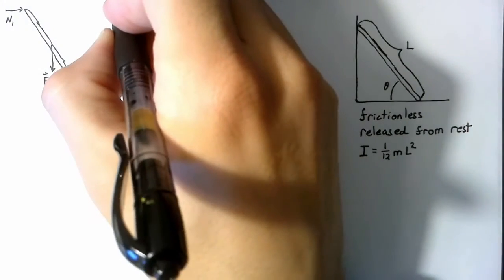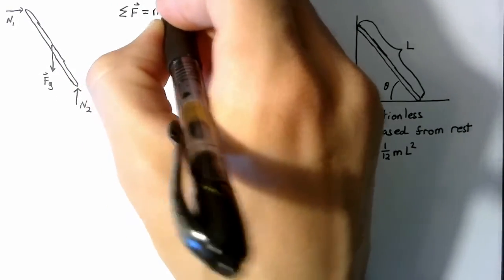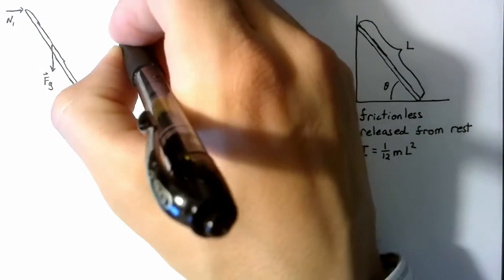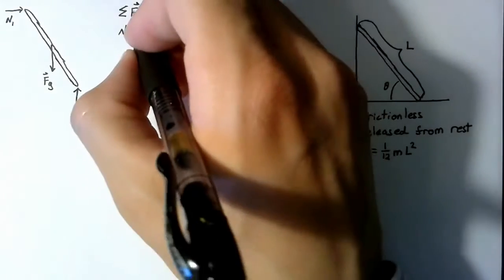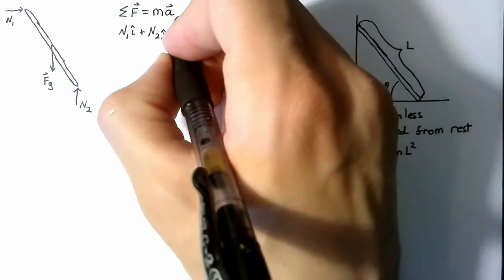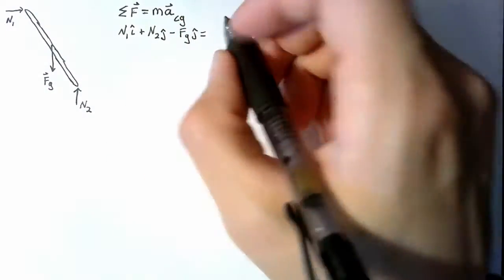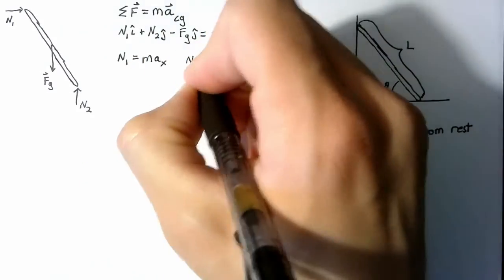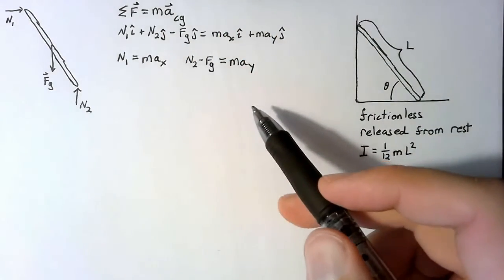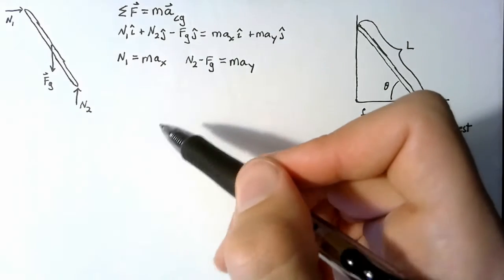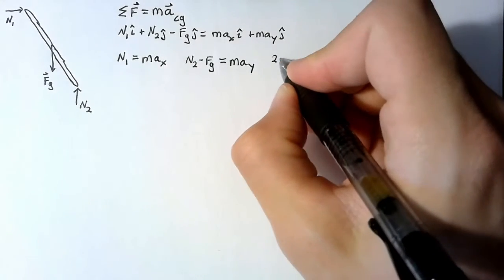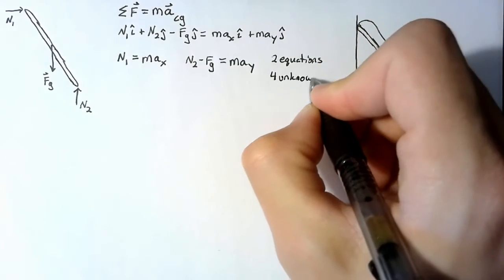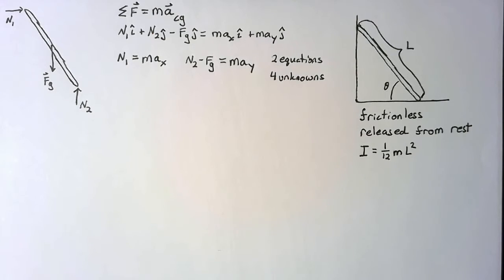We can write out these equations as sum of the forces equal to mass times acceleration, and we're interested specifically in the acceleration of the center of gravity. The N1 force is exactly in the i direction, N2 is in positive j, and the force of gravity is negative j. We can split our acceleration into an x term and a y term. Now we'll split the i and j terms into two separate equations. Doing a systems check: we have two equations and four unknowns — both normal forces and both accelerations are unknown. Let's take the sum of the moments and see if that helps.